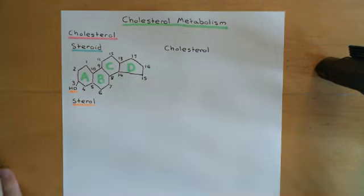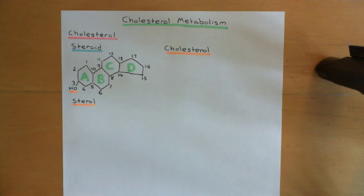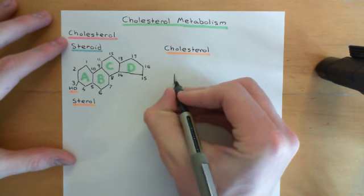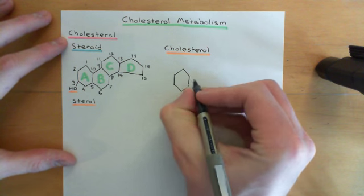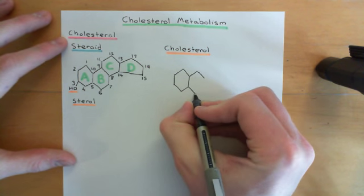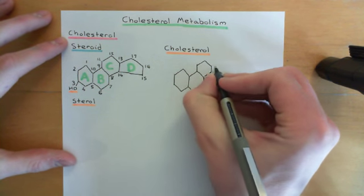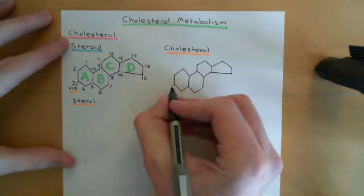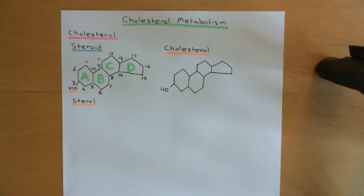Now let's look at a specific example of a sterol — the one we're talking about for the entire video: cholesterol. I want to show how you have to modify the core sterol structure to turn it into cholesterol. There are four modifications that you have to make. Let me redraw the basic sterol structure: here is ring A, ring B, ring C, and ring D, with the alcohol group at carbon 3.